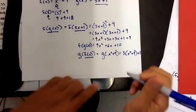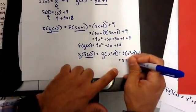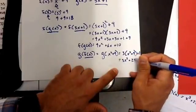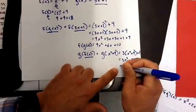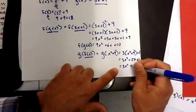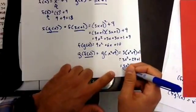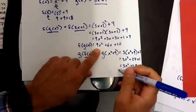Now I'm going to distribute. So this gives me 3x squared plus 27, plus 1. 3x squared plus 28. This is obviously a lot different from the last one that I got.